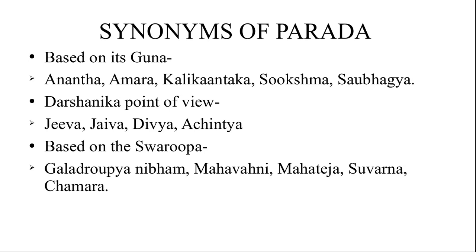Based on its Guna, the synonyms include Ananta, Amara, Sukshma, etc. Then according to the Darshanika point of view, it has synonyms like Jeeva, Divya, Achintya, etc. Then based on Swarupa, Galat Raupya Nibham — Raupya means silver and Galat Raupya means molten silver — so it has the appearance of molten silver. Then Mahavanni, Mahateja, Suvarna, Chamara, etc. — all synonyms based on its Swarupa.